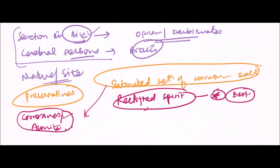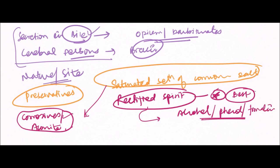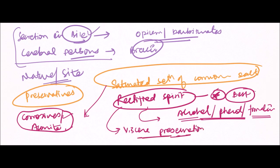Rectified spirit cannot be used in poisoning by alcohol, phenol, or formalin — it is contraindicated in these cases. Overall, rectified spirit is the best preservative for viscera chemical analysis. To summarize: the best preservative is rectified spirit, but the commonly used preservative is saturated solution of common salt.